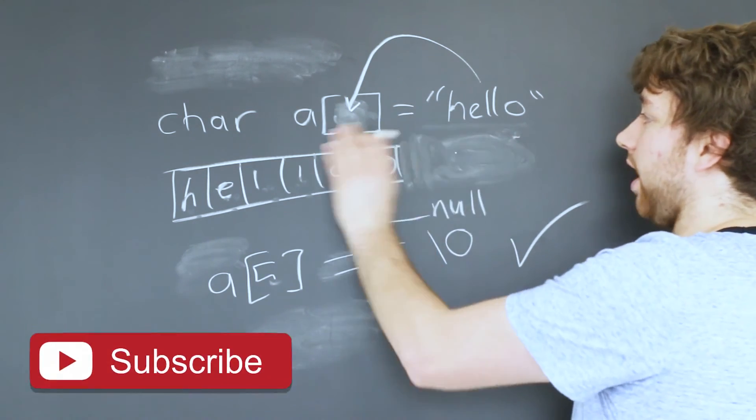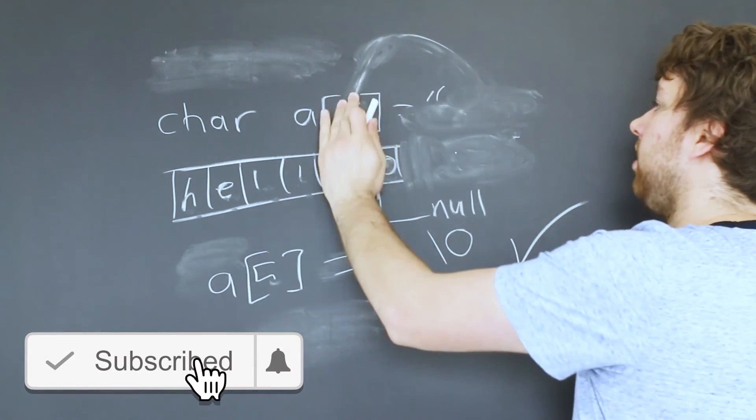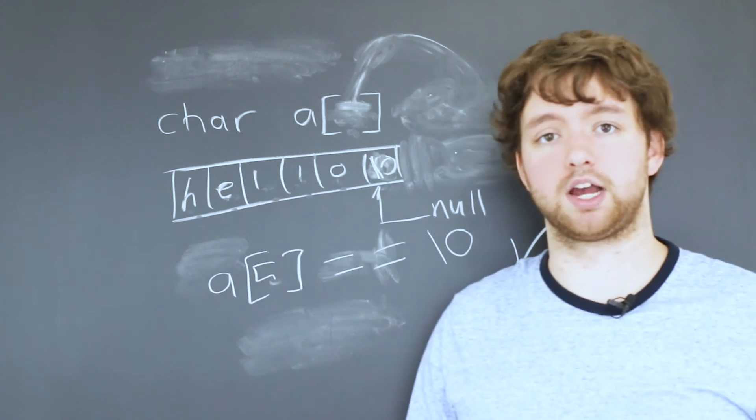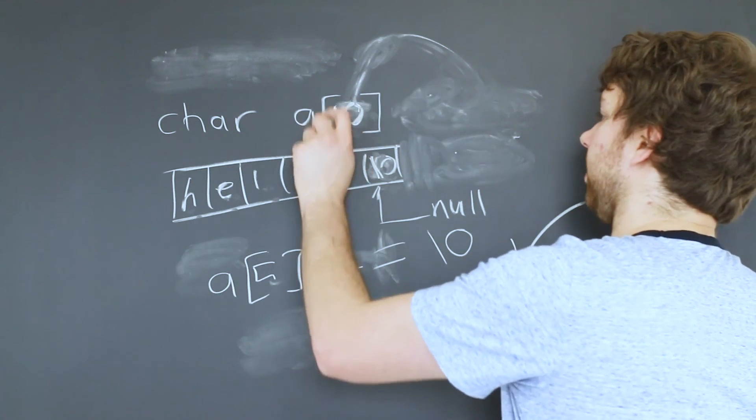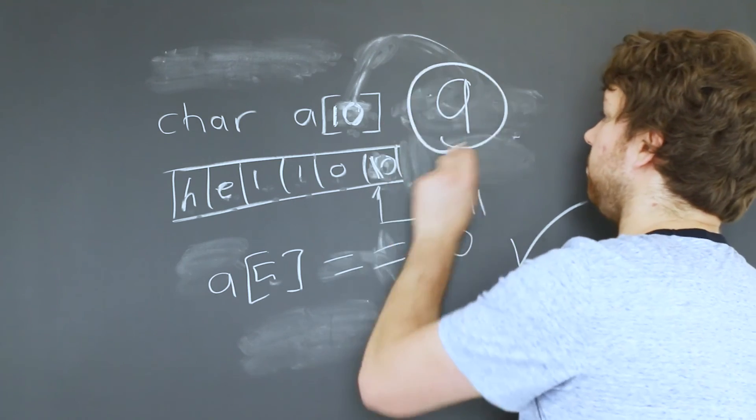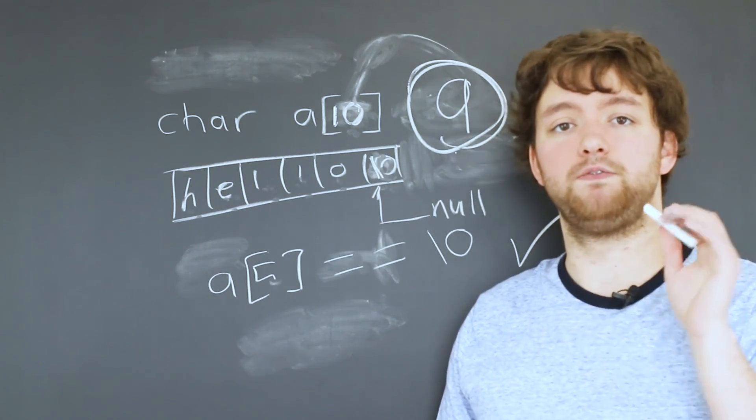The only time you would want to put a value there is if you're not assigning a string constant like that. And like, let's say you're getting it from input. Well, then you want to make sure that your string size is set. So you could use the value 10 there, and then only take the first nine characters from the user because you have to reserve that 10th space for